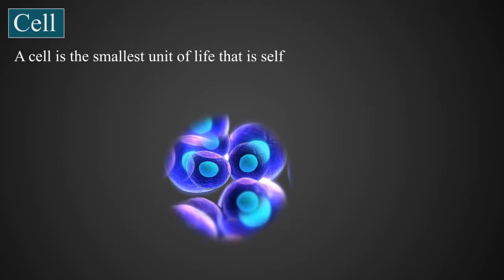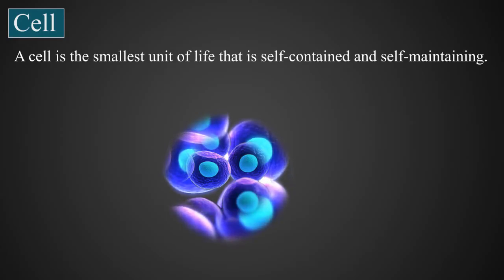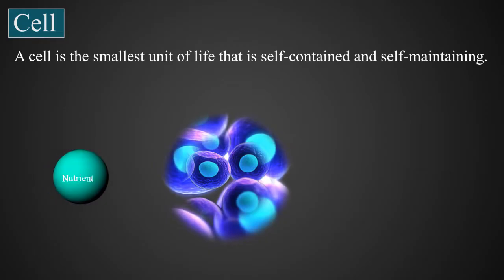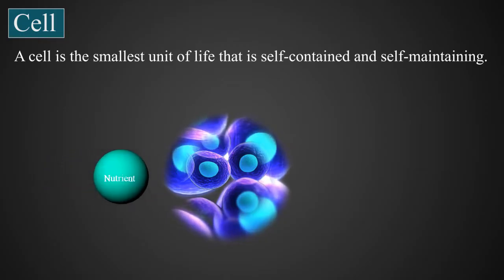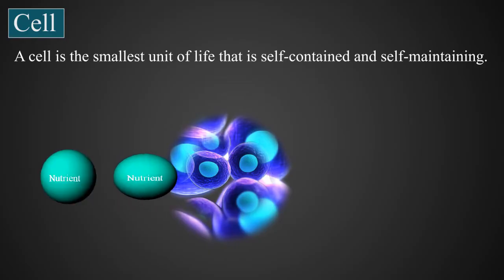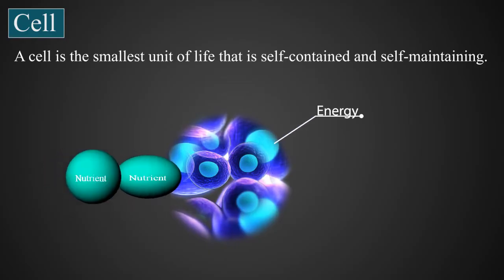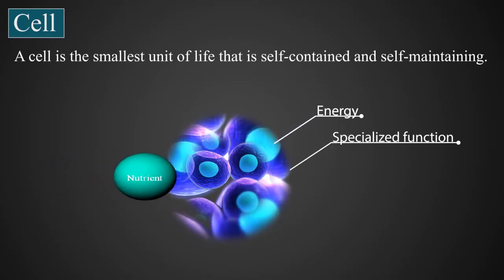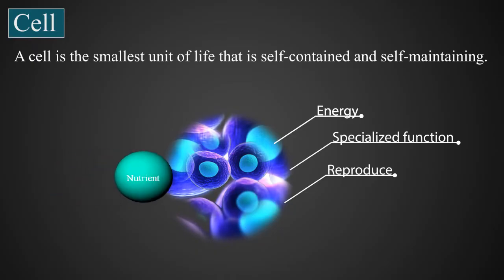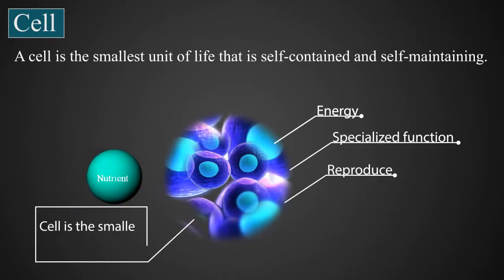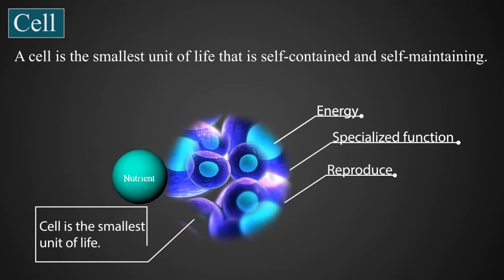The cell is the smallest unit of life that is self-contained and self-maintaining. A cell can take in nutrients, convert the nutrients into energy, carry out specialized functions, and can also reproduce. The cell is the smallest unit of life.